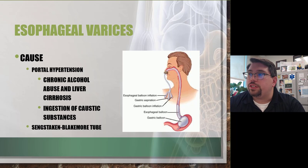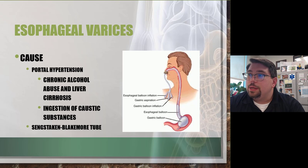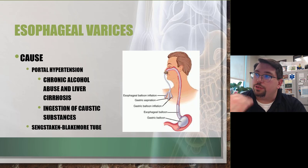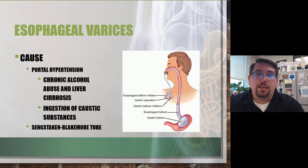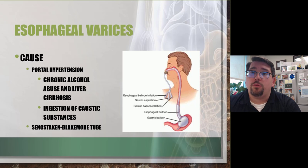One way to tamponade esophageal varices bleeding is the Sengstaken-Blakemore tube — inserted like a nasal gastric tube, it has a balloon that inflates to help tamponade the bleed. If it can be placed, great, but often the bleeding is life-threatening before we even get to that point.